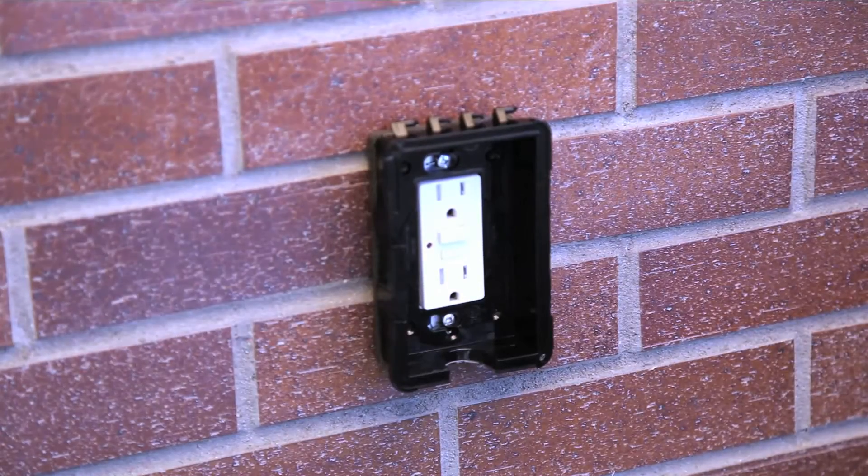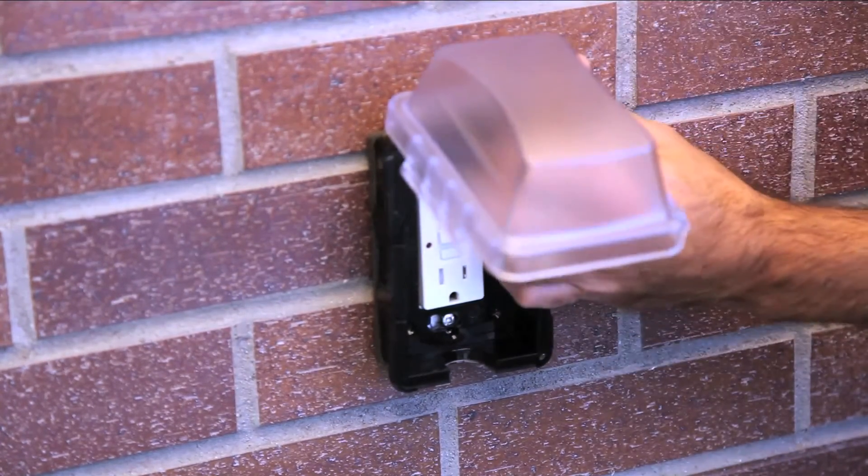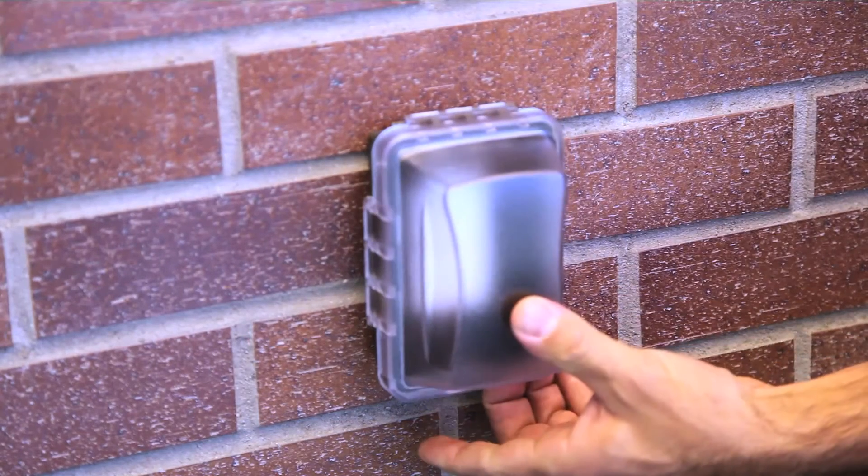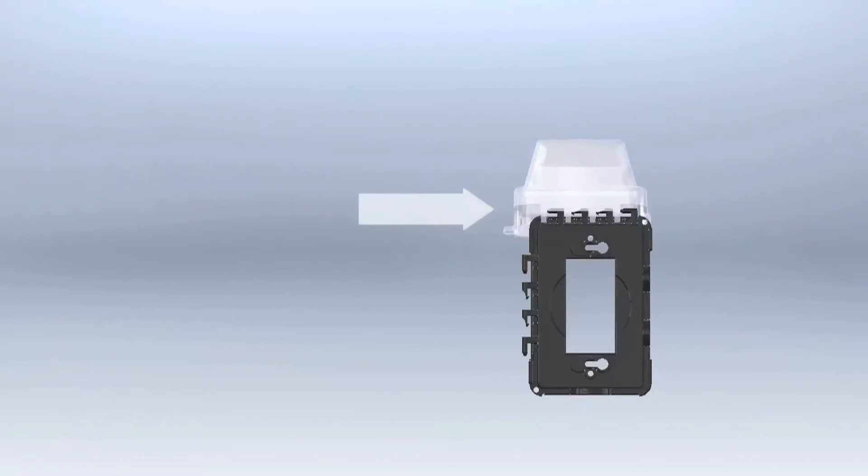All that is left is to attach the cover. Align hinge pins on base with holes on cover and push sideways to snap in place. To allow the hinges to line up properly, angle the cover between 60 and 80 degrees before snapping together.